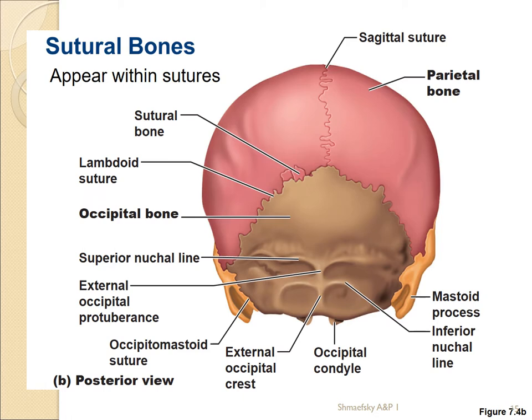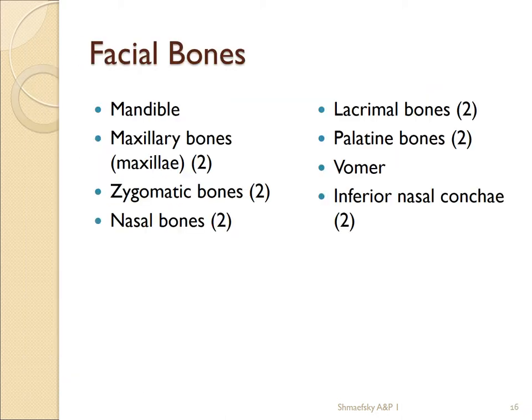Here are the cranial bones again from the rear view showing the sutures clearly. You need to know the sagittal suture and the lambdoidal suture, which is shaped like a little lambda — the letter L in Greek.